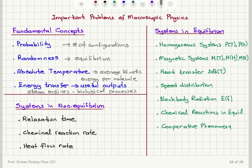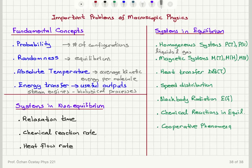For liquids and gases, we find the relationship between macroscopic parameters such as pressure, temperature, and volume.